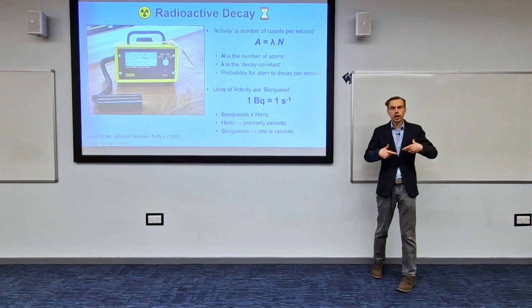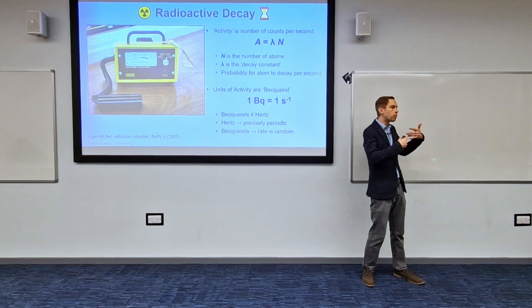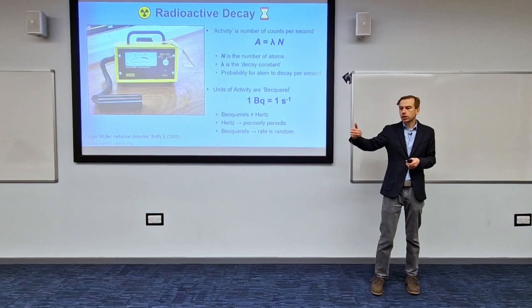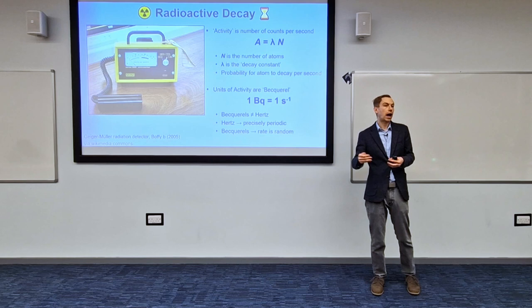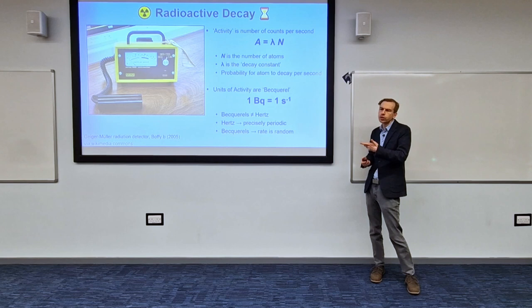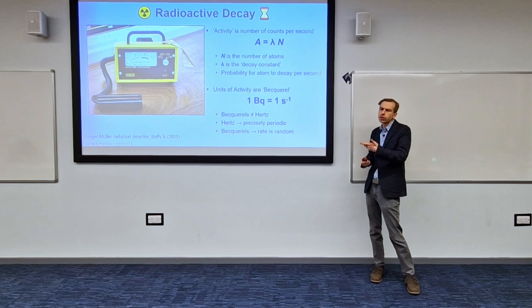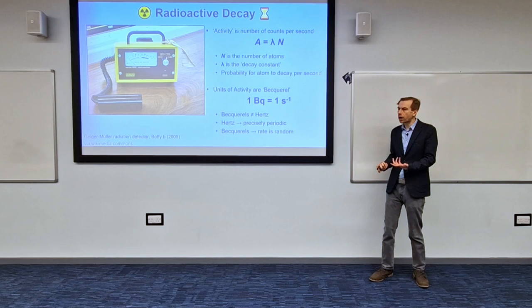Where activity starts to get really interesting is when we think about how it changes over time. If we have a lump of radioactive source — some uranium, some plutonium, something like that — it's not going to give a constant rate of activity. It's going to decay as the radioactive source is decaying. This is a really essential, really important property of any radioactive material. So let's have a think about how we can formulate some of the math involved.